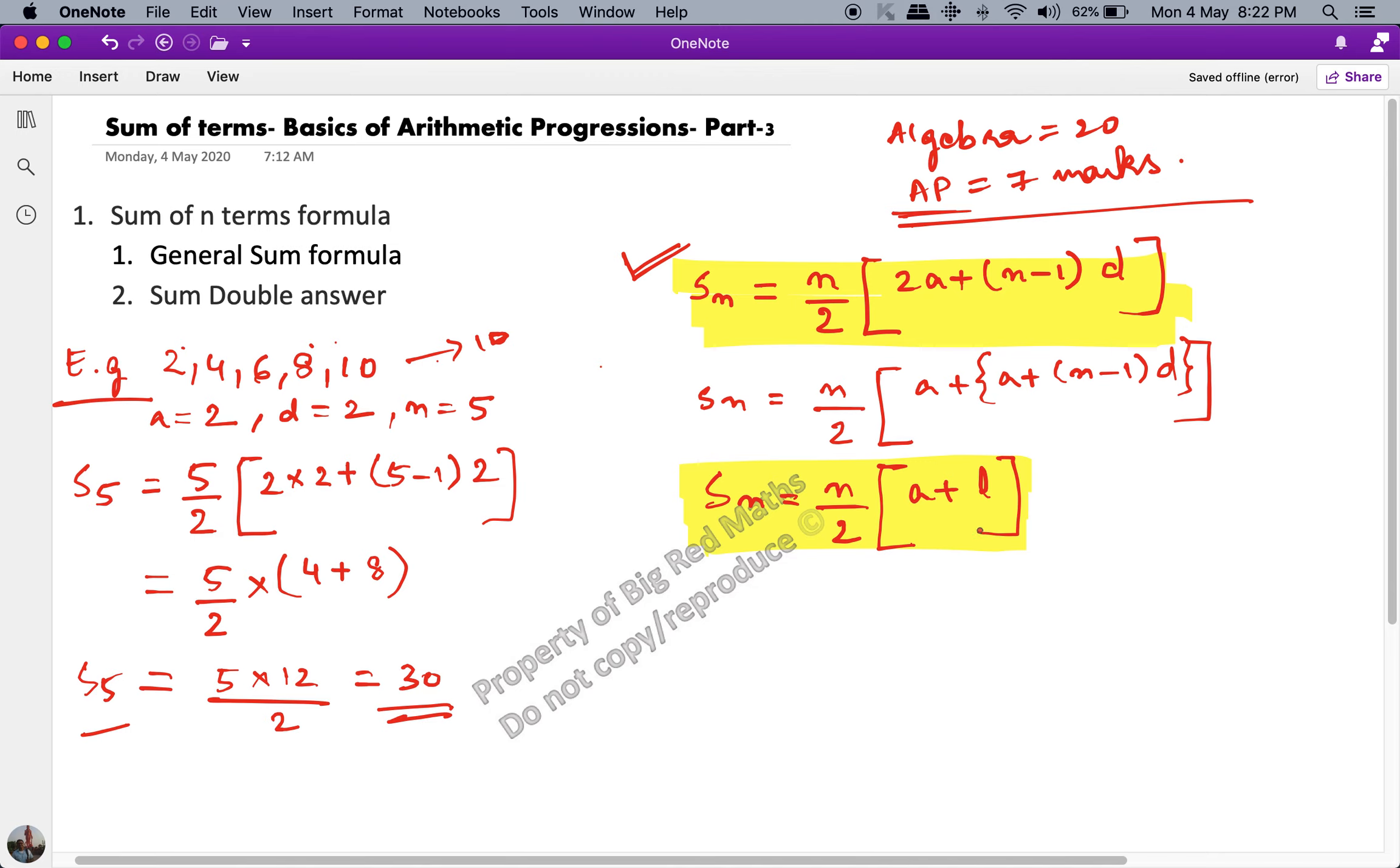Now let us put this formula to use. S of 5 should be equal to n by 2, which is 5 upon 2, multiplied by the first term plus the last term. The first term is 2 plus the last term is 10. See what do we get. We get 5 multiplied by 12.